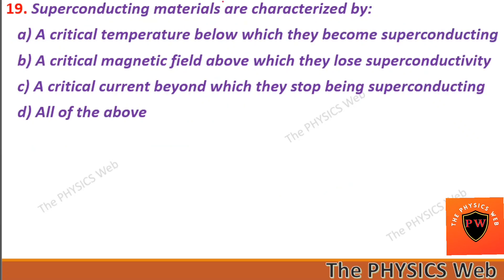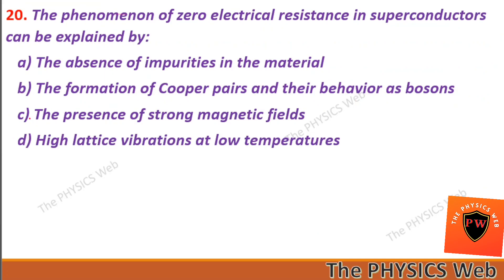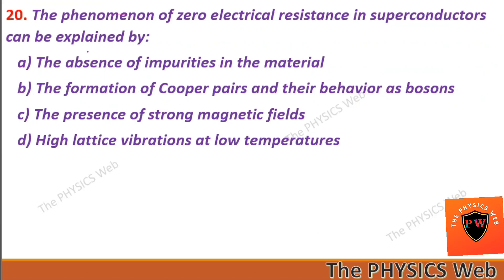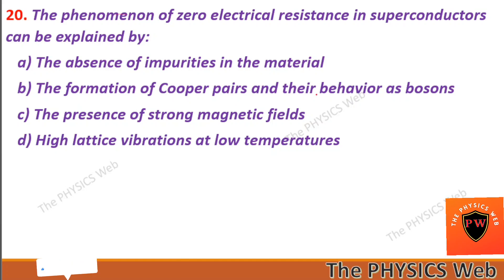Next, question nineteen: superconducting materials are characterized by all of the above. So D is your correct option. Question twenty: the phenomenon of zero electrical resistance in superconductors can be explained by the formation of Cooper pairs and their behavior as bosons. So B is your correct option.